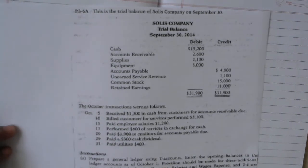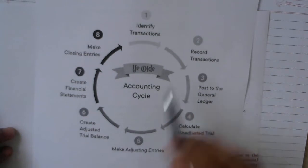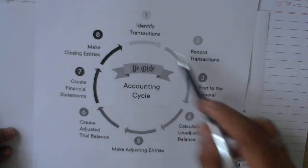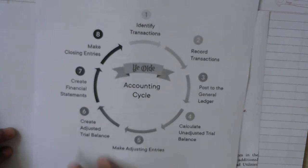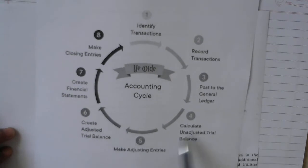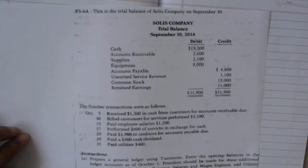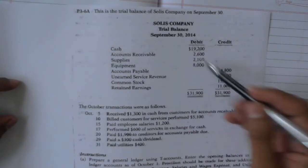Let's get started. As a review, in this playlist I am covering the accounting cycle. We have completed up to calculating the unadjusted trial balance — that is this particular video. In the next video we will see making adjusting entries and the other remaining steps.